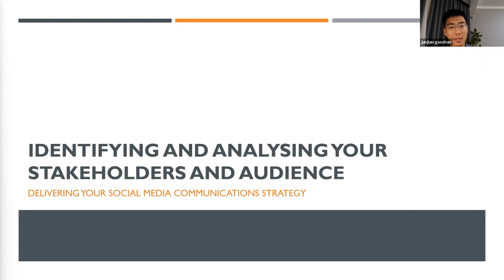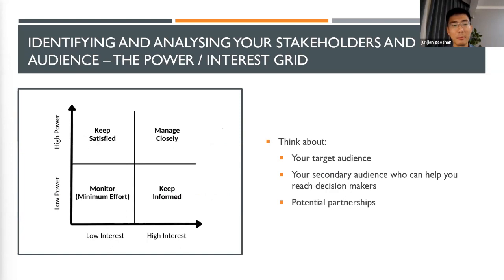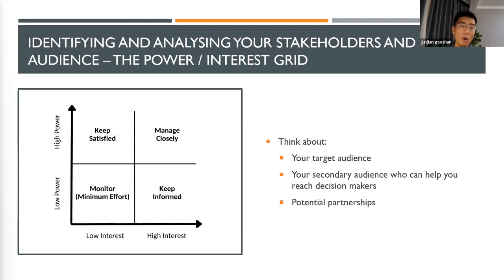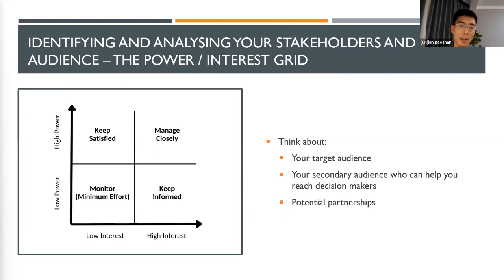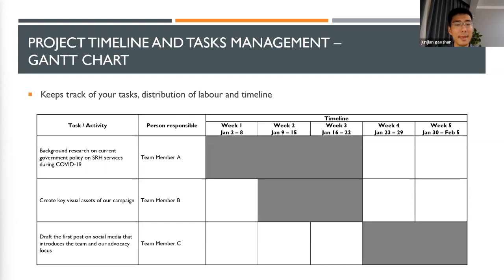With your message developed, you need to know who you are going to deliver it to. For that, I'll introduce the stakeholder map — a matrix that helps you categorize stakeholders into four groups. Those with high interest and high power need to be managed very closely. Those with low interest and low power need to be monitored with minimum effort. Other groups need to be kept satisfied or kept informed. This tool breaks down the subpopulations that matter most to your advocacy.